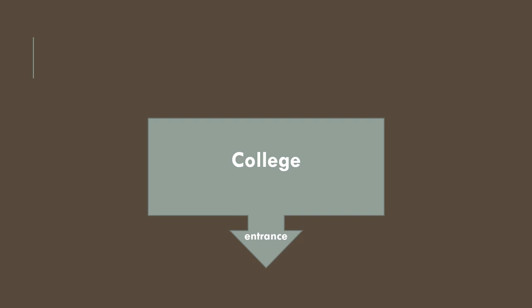Let's understand wrongful restraint in a very simple manner. For example, this is a college premises and this is the entrance. Students want to come to the college for study, which is their basic right. Some antisocial elements are standing at the entrance of the college and they are wrongfully restraining the students from entering into the college. Although there is also another path and space around the college that is free — they are only restraining students from entering the college, but the other paths are open for them. So it is considered that the students are being wrongfully restrained by the antisocial elements from doing something which is their legal right, that is to study. So that is called wrongful restraint.